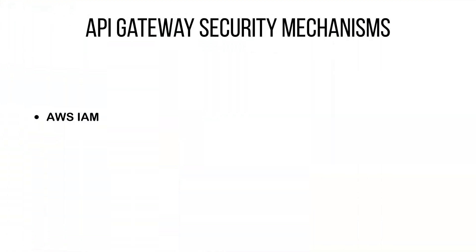So let's get started with the API Gateway Security Mechanisms. API Gateway supports many different mechanisms for authentication and authorization. Some examples are AWS IAM roles and policies, where you can control who invokes your APIs.